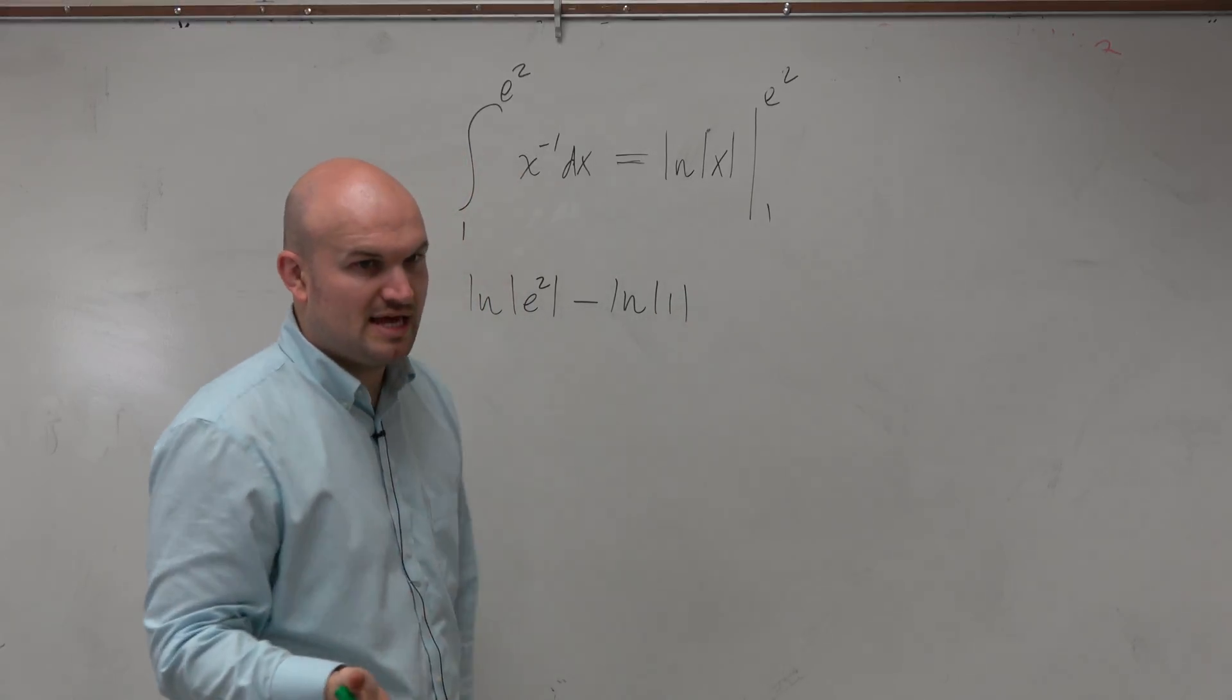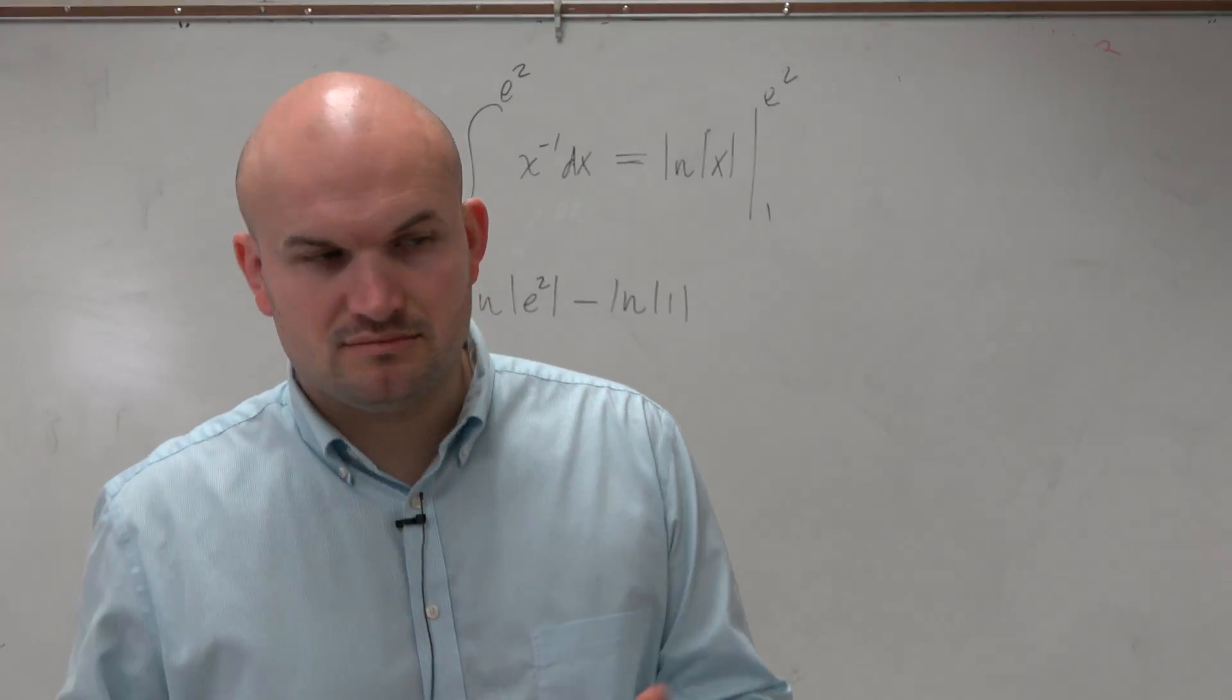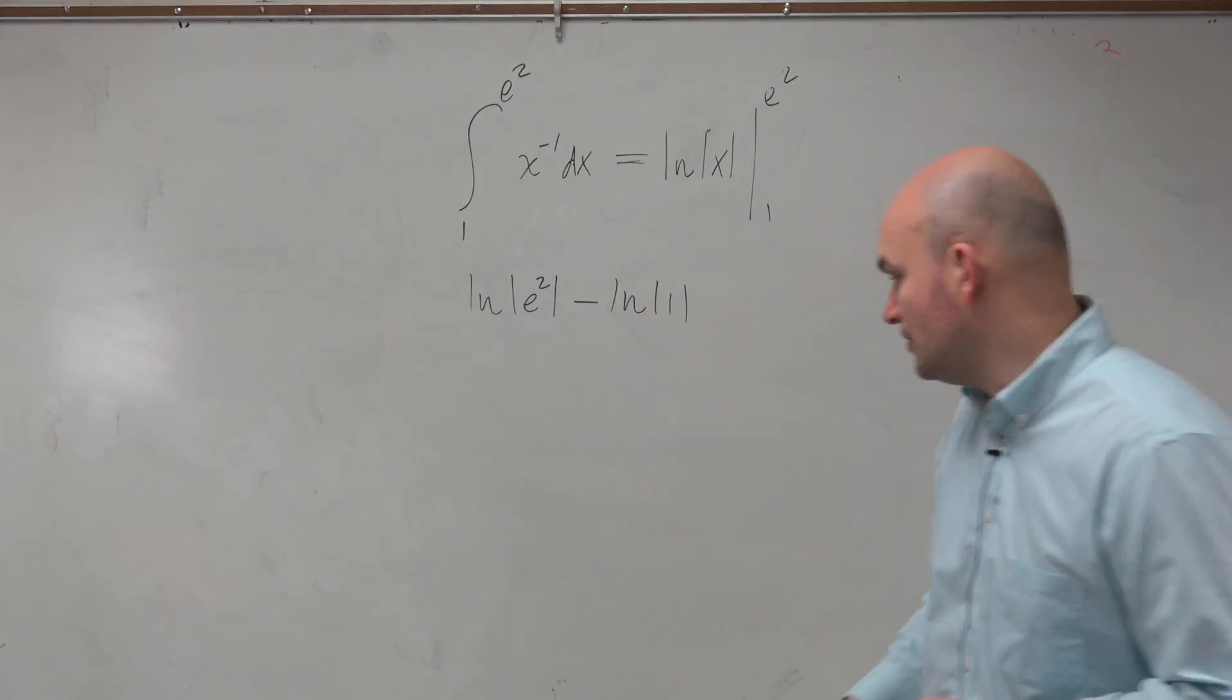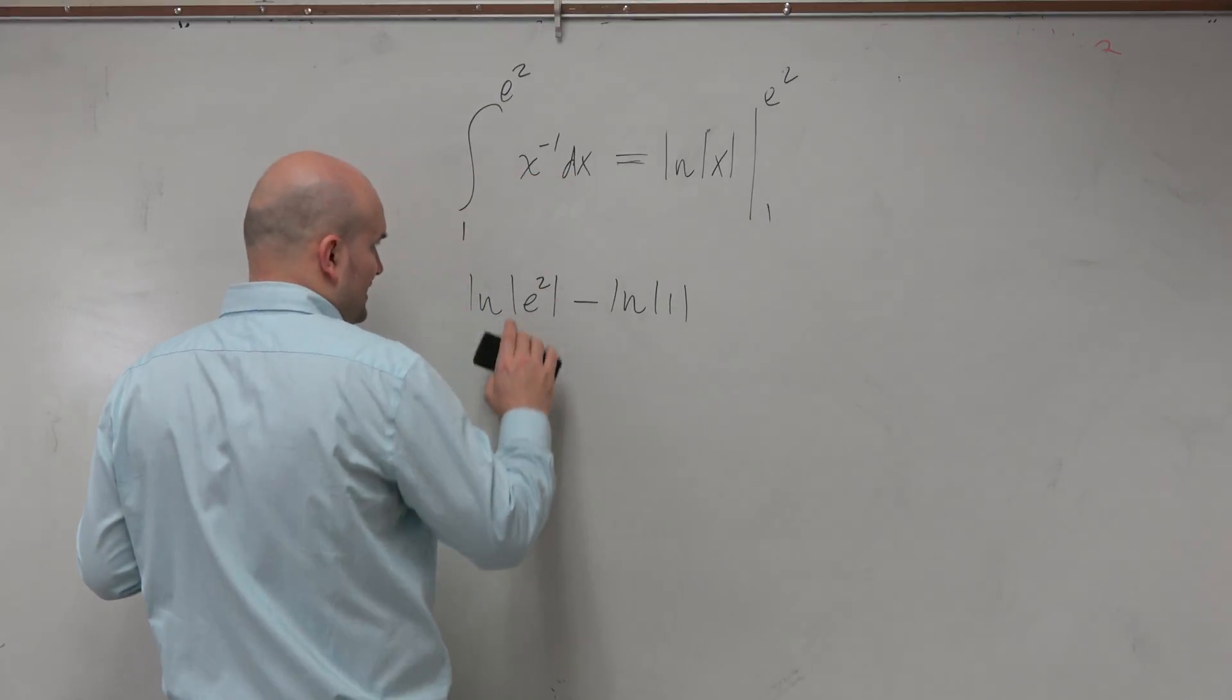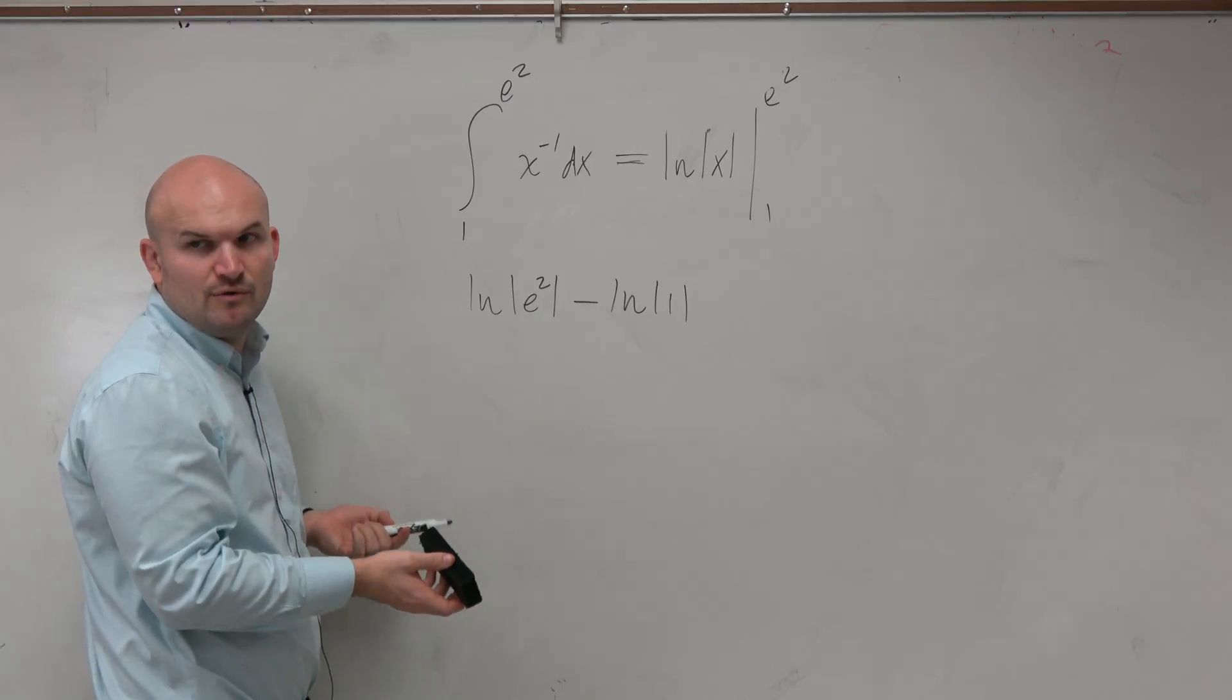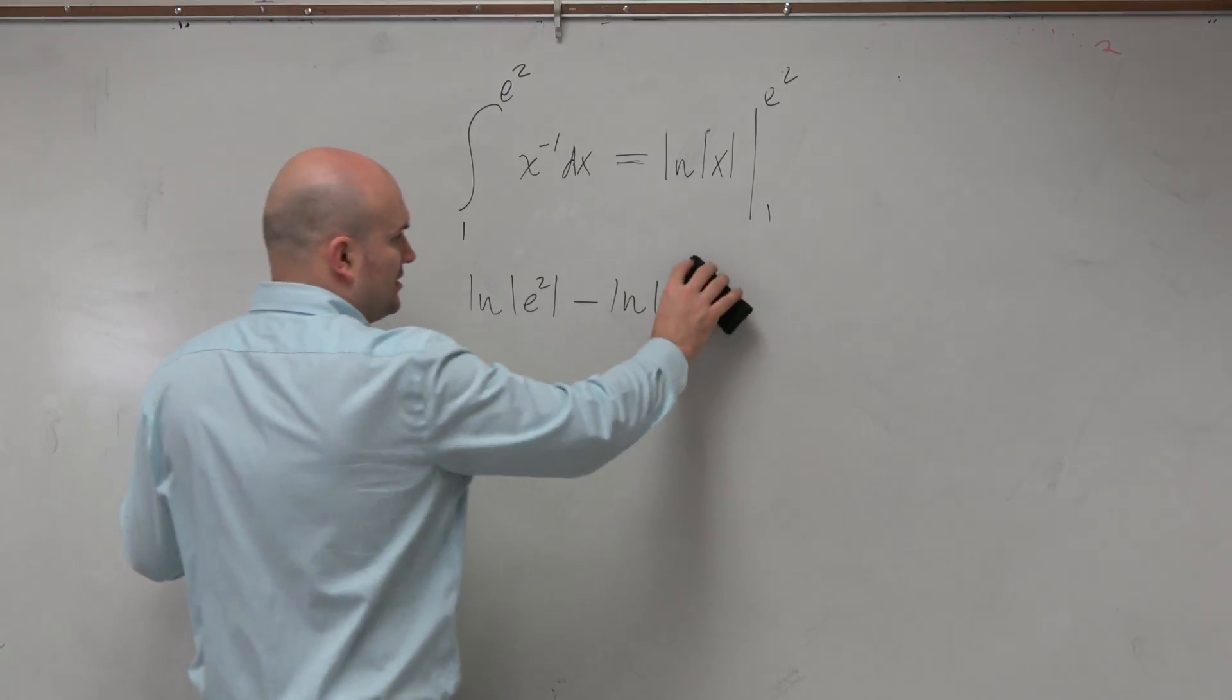Now, we only really need to use the absolute value if we need to apply them. But both of these here are positive values. So if we want to further simplify, we don't really need the absolute value of e squared. We know that's always positive, right? We don't really need the absolute value of 1. We know the absolute value of 1 is 1, right? So we're kind of good there.